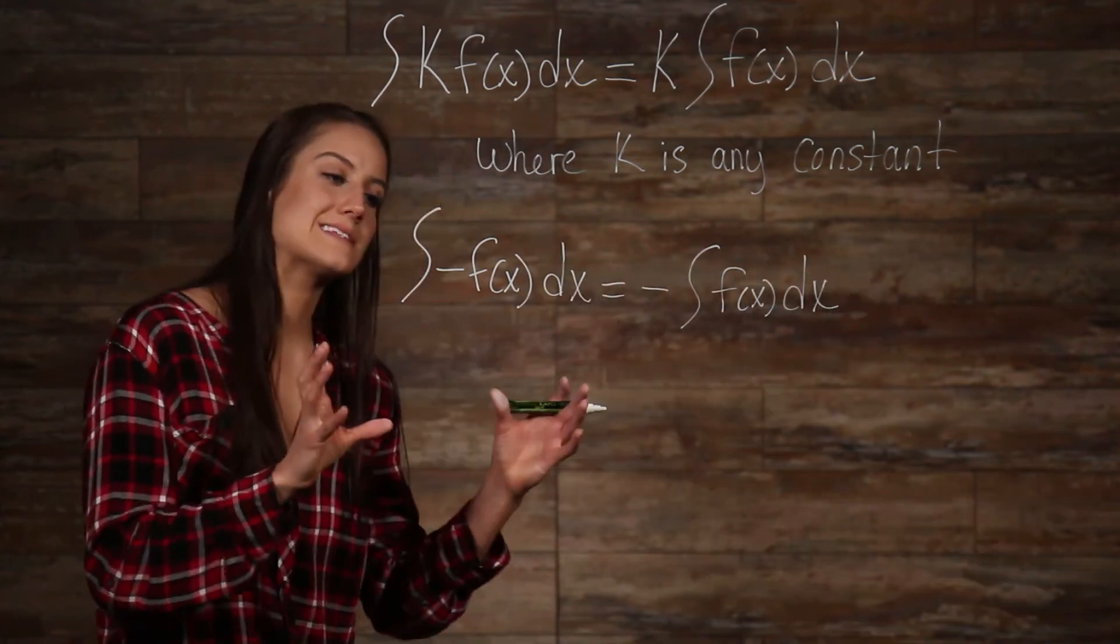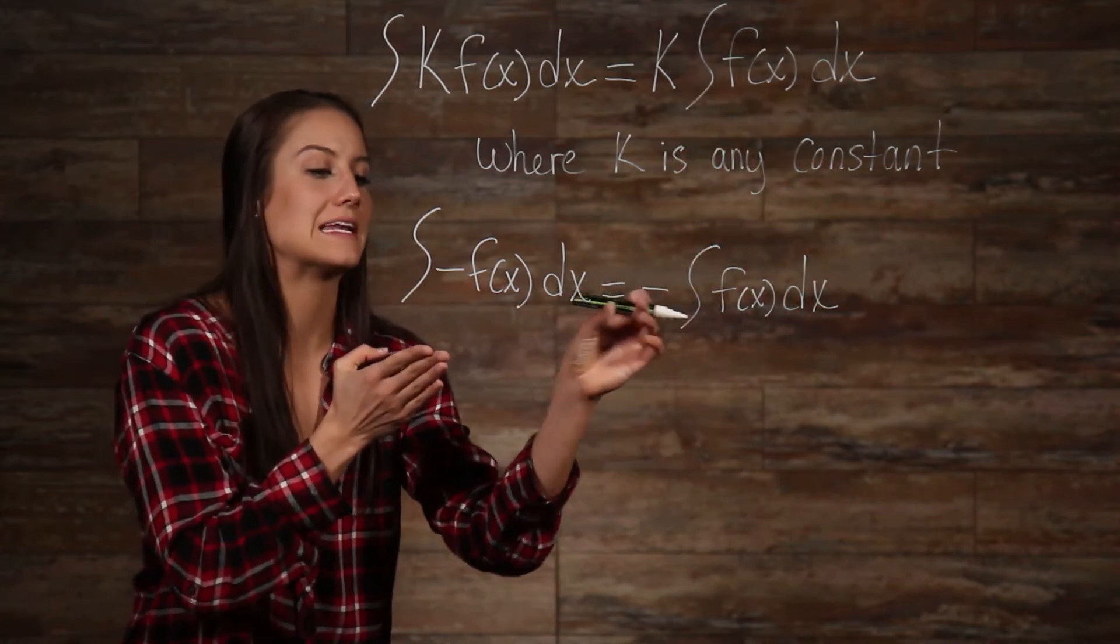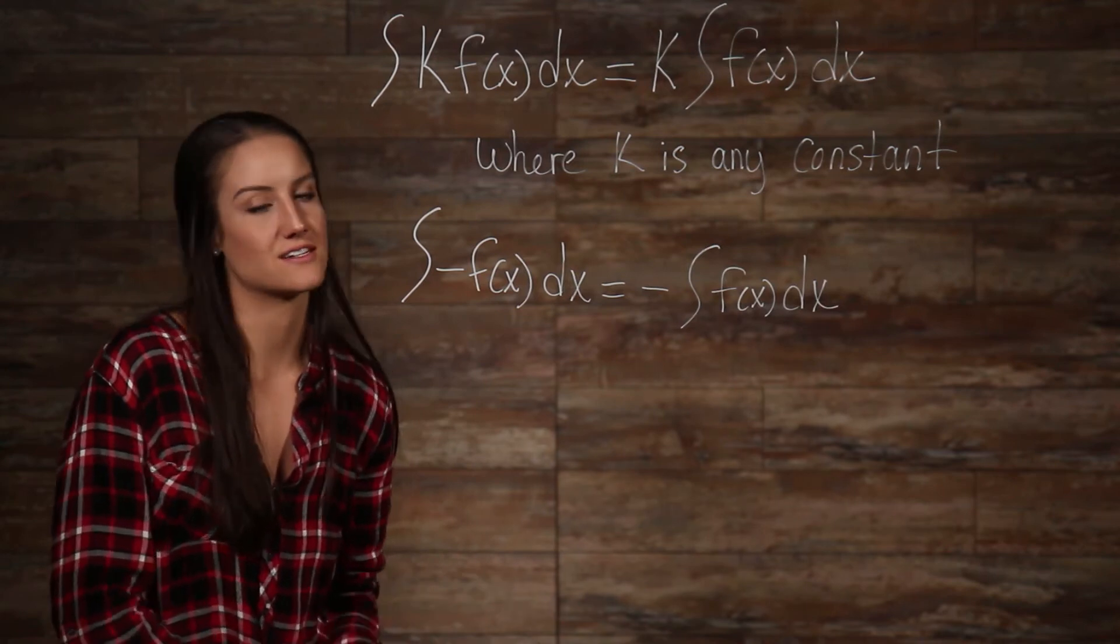The second property is this. Now, what this is is it is really just the first property, but what this tells us that we can do is we can factor out any negative sign in front of that constant as well.